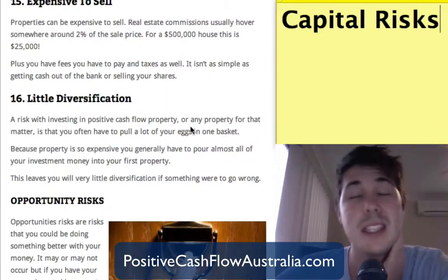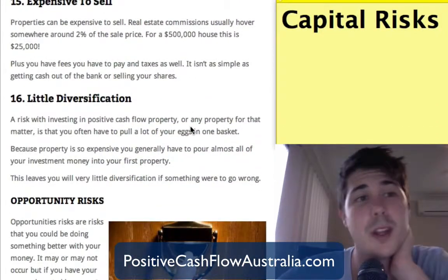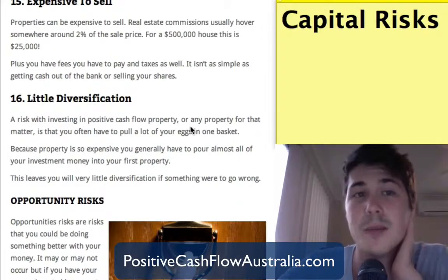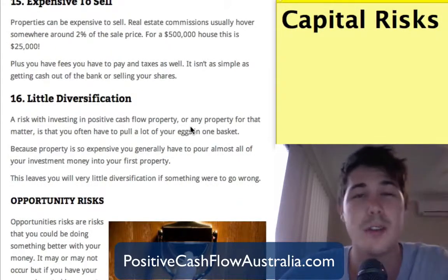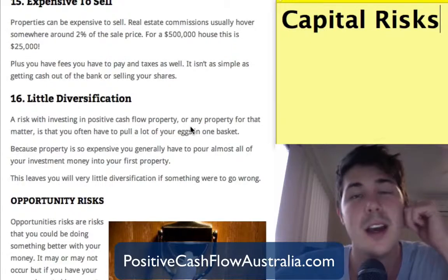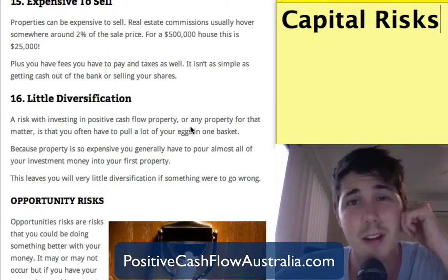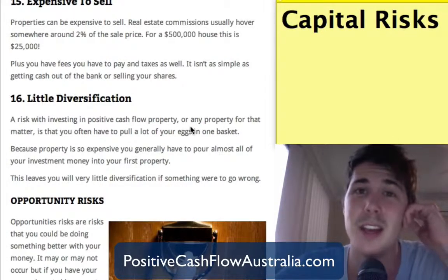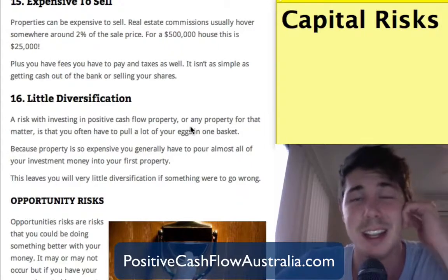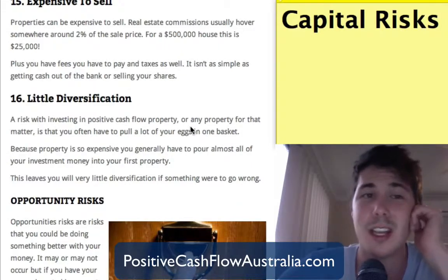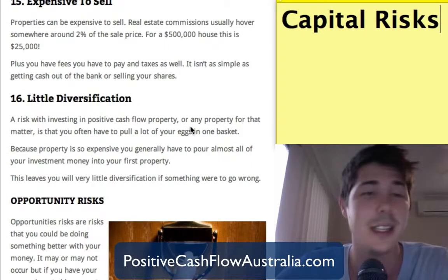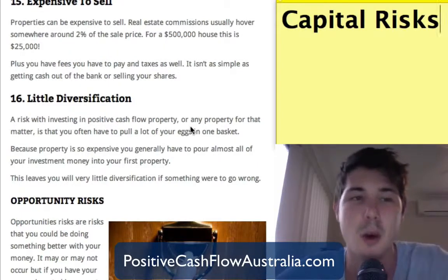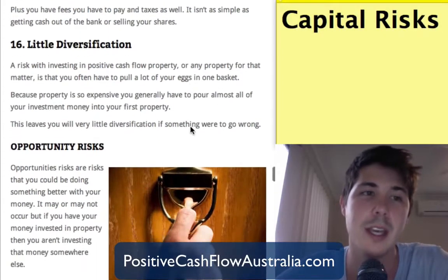Number fifteen is the cost of selling. Properties can be expensive to sell — real estate commissions usually hover around the 2% mark. So for a $500,000 house, that's $25,000 you're going to have to pay just to the agent, not counting fees, solicitors, and all that other stuff. You need to take all of that into account.